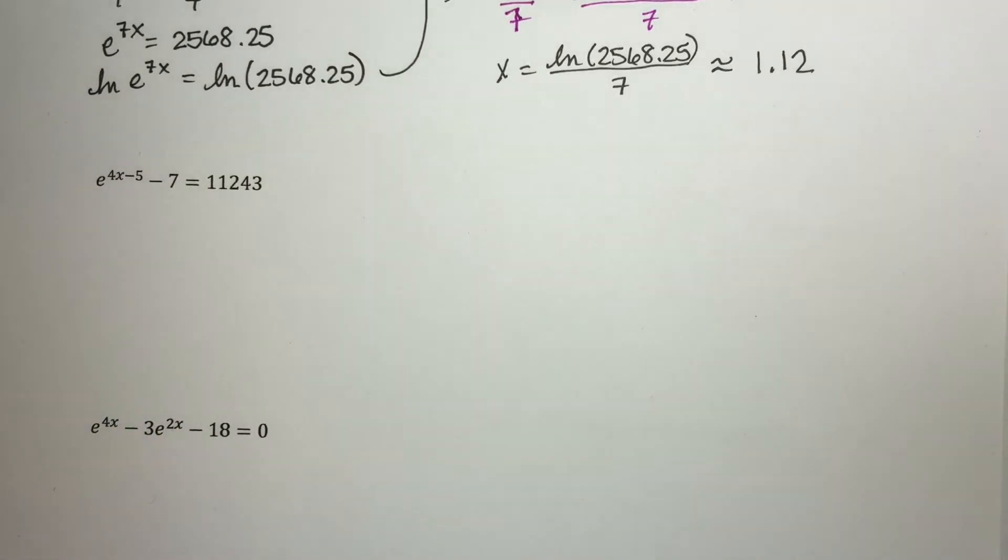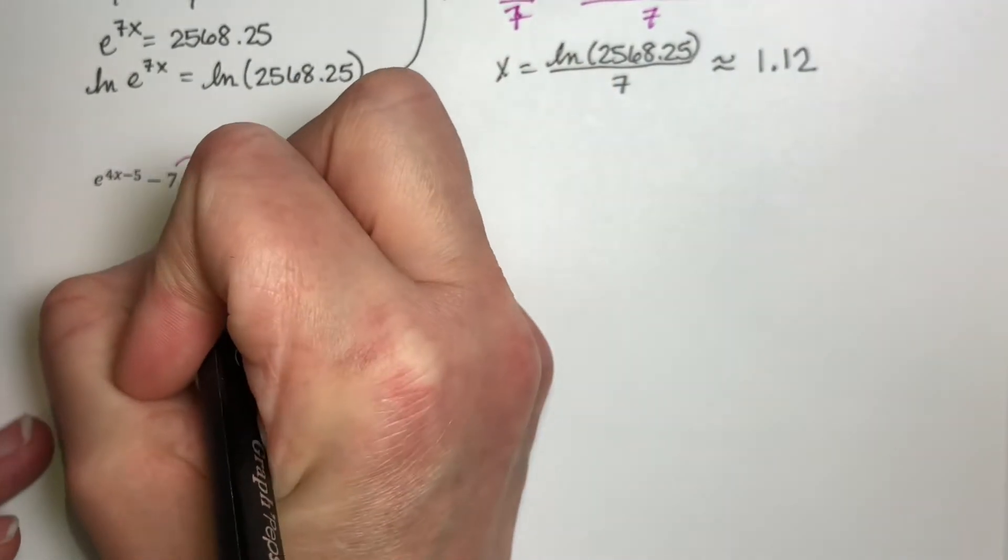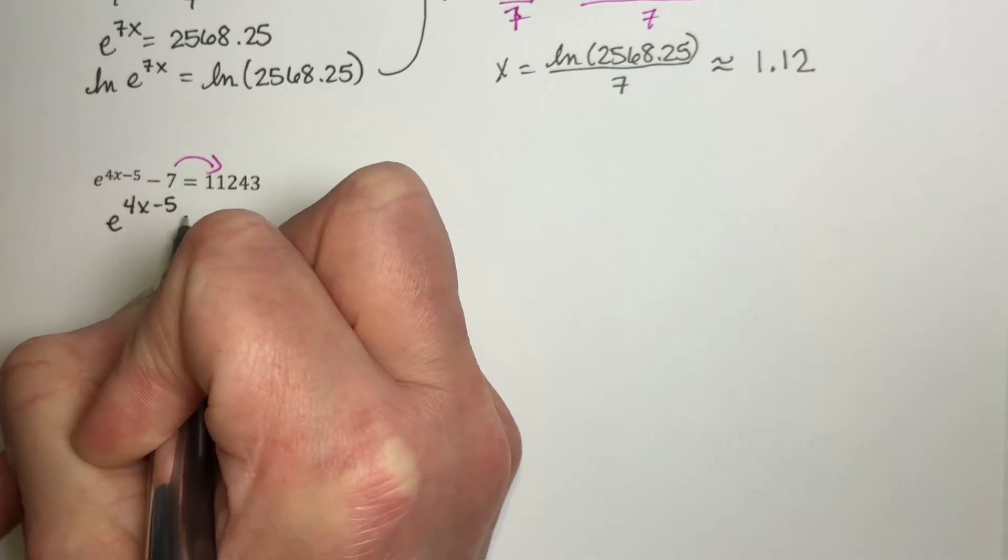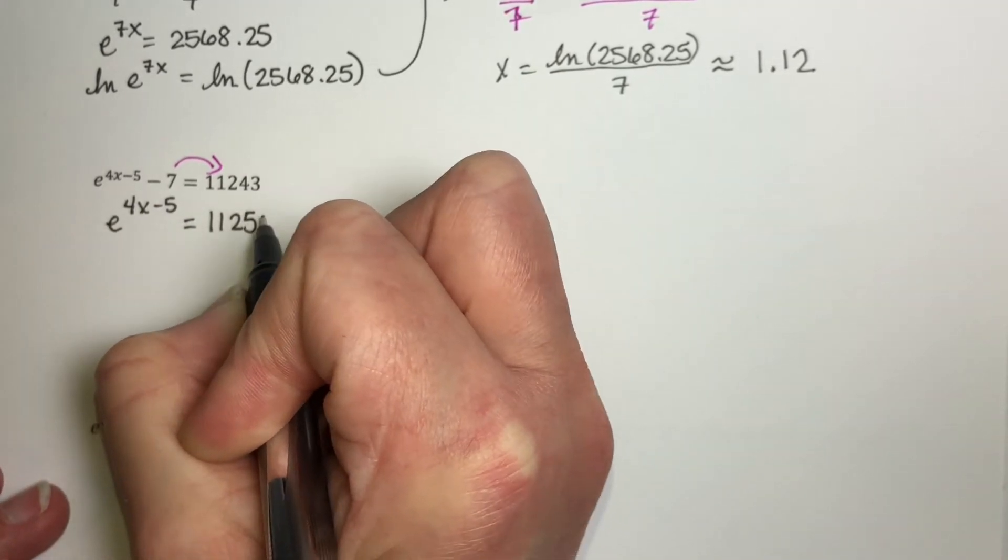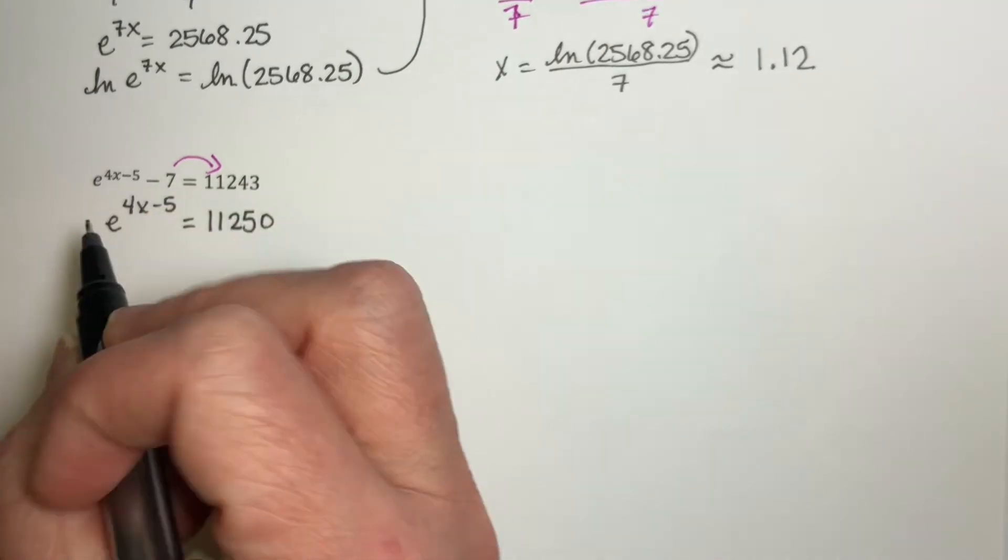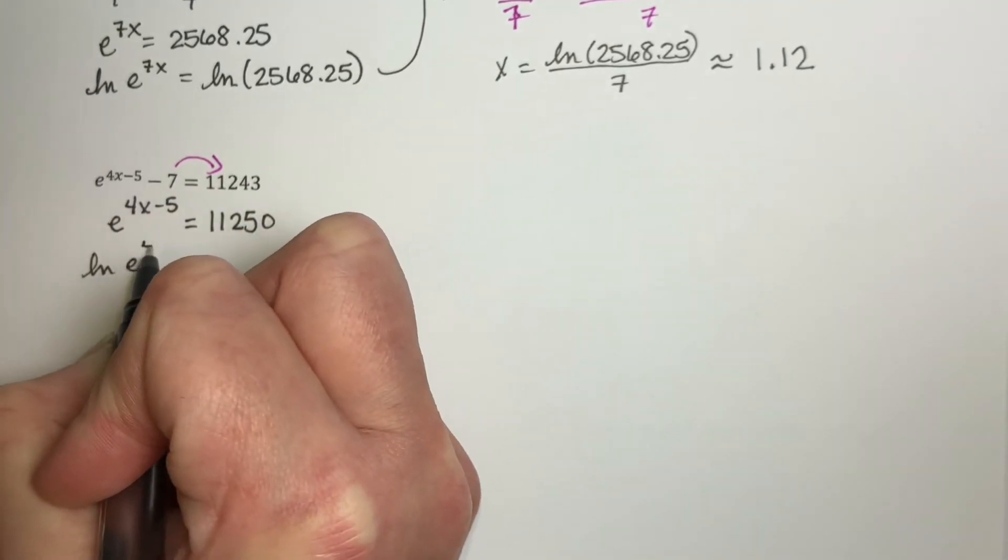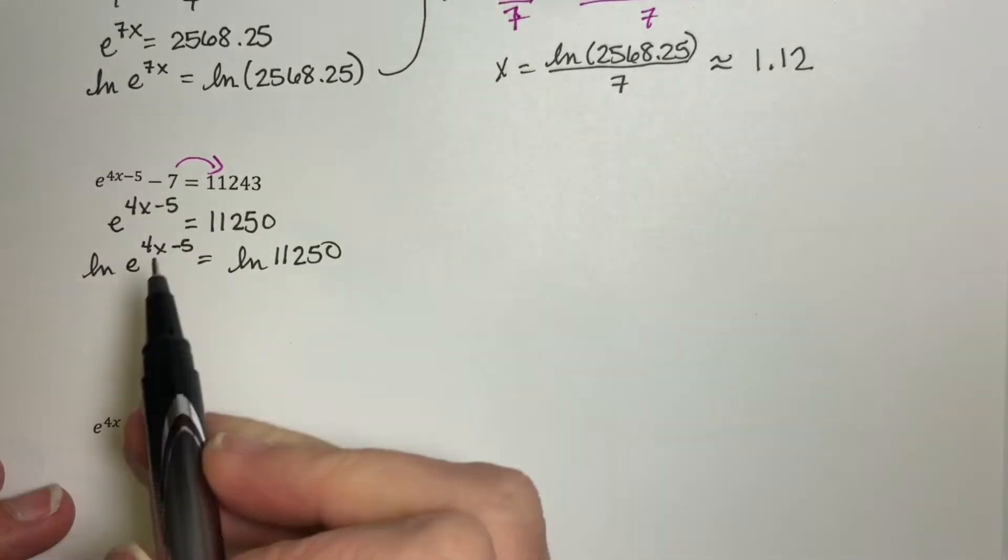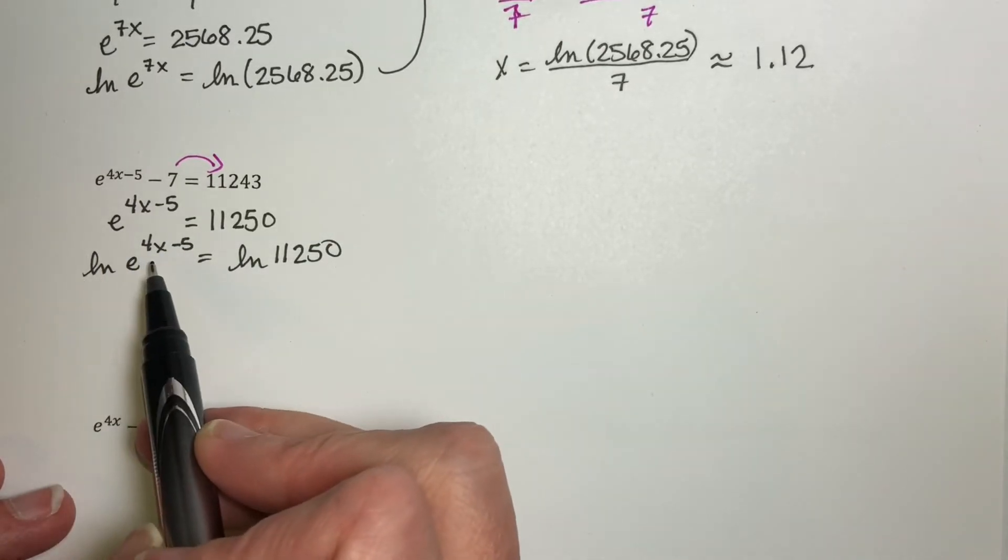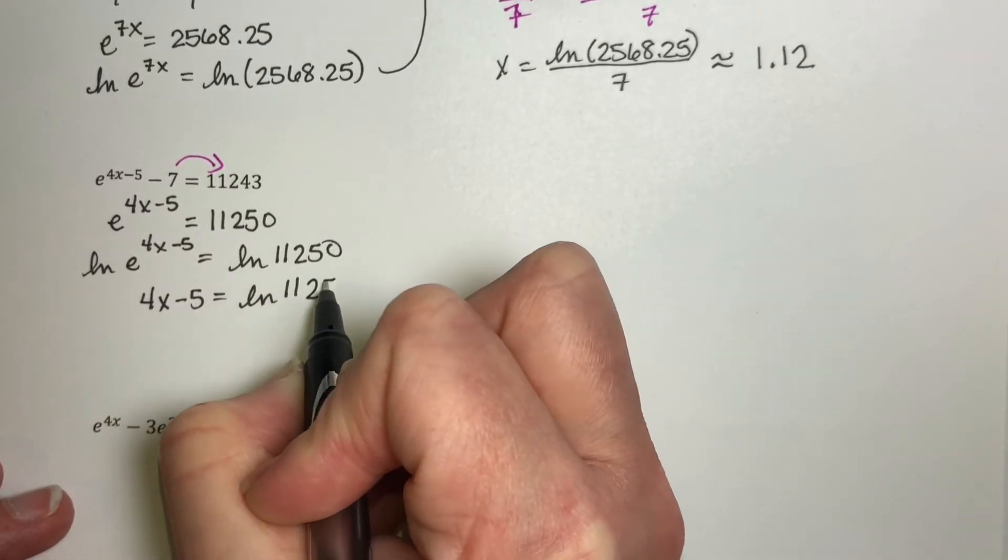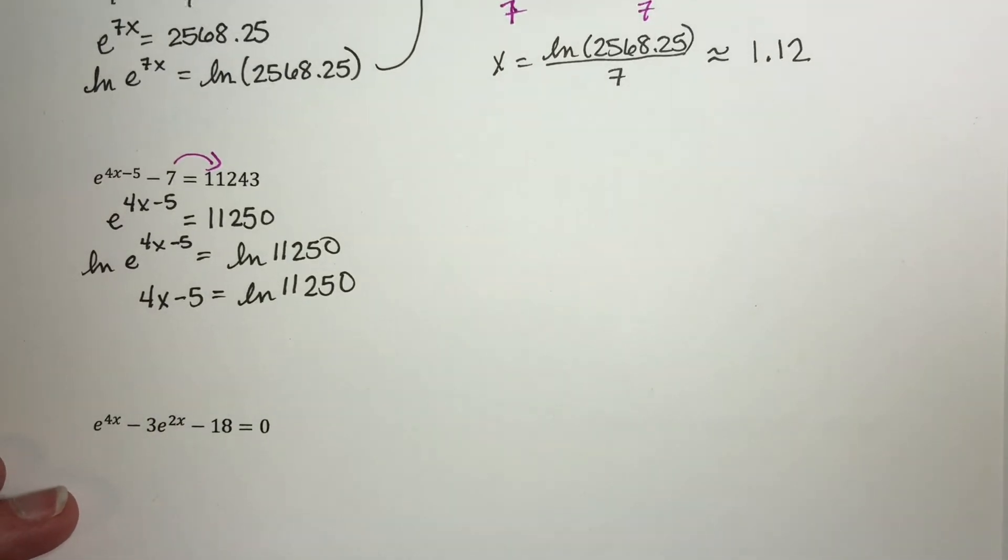Just like up here, the first thing we want to do is to get our e value alone on one side. That way, when we take natural log of both sides, it doesn't add any extra logs in there that we have to deal with. So I am just going to add 7 to both sides, so that leaves e^(4x-5) alone. So that equals 11250. Now this exponential is alone with base e, so I'm going to take natural log of both sides. You probably will get to where you're skipping this particular step, and you will go directly to just the exponent. But write the steps out until you are sure that you're comfortable with this.